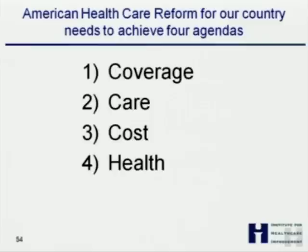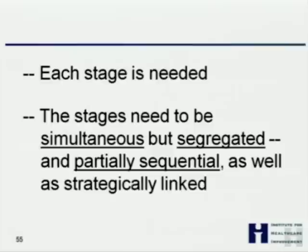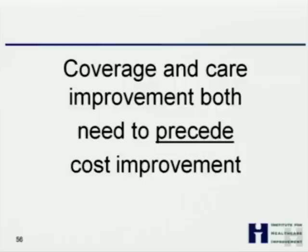American health care reform needs to achieve those goals. It needs to achieve coverage — cover everyone. We need care improvement, cost improvement, and health improvement. Each of the stages is needed. They need to be simultaneous, but they also need to be segregated. We can't blend them; we have to link them. They have to be sequential as well as linked. And care and coverage improvement need to precede cost improvement.